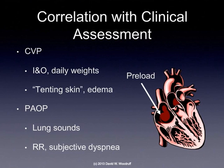That's systemic changes, and they may not directly correlate with an acute change in the patient's cardiac output. On the left side of the heart, the amount of fluid coming in is going to back up and be reflected in the pulmonary artery occlusive pressure. We can correlate that with our clinical assessment by looking at the lung sounds, especially assessing for rales, and then assessing for an increase in respiratory rate associated with subjective dyspnea.